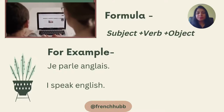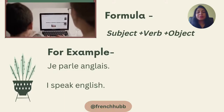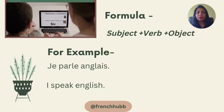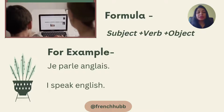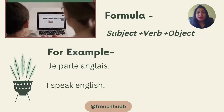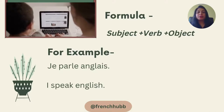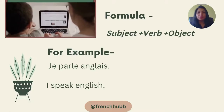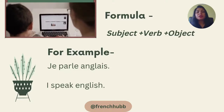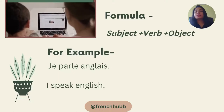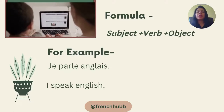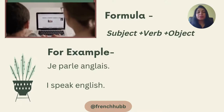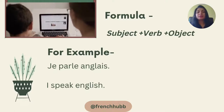For example, we have taken the verb parler, and the object is anglais. So: je parle anglais, meaning I speak English. Here, my subject is je, the verb is parle, and the object is anglais. We know the conjugation of parler according to each subject. So we use the conjugation according to the subject and then add the object. Make sure you remember this formula: Subject + Verb + Object.